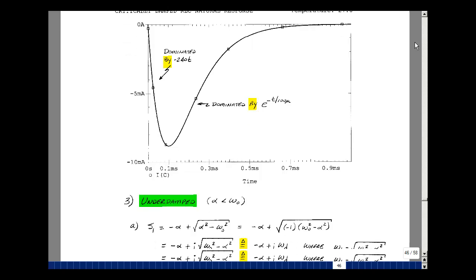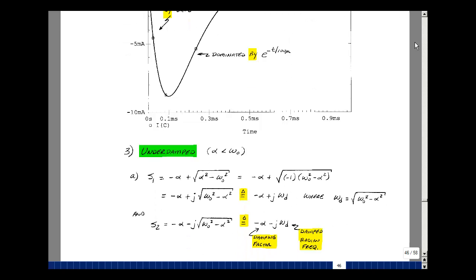In our previous lessons, we took a look at the natural response of a series RLC circuit, and we looked at two cases: the overdamped case and the critically damped case. In the overdamped case, the term alpha was greater than omega-naught, and in the critically damped case, alpha was equal to omega-naught.